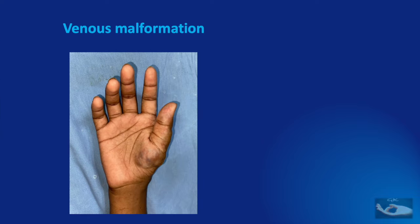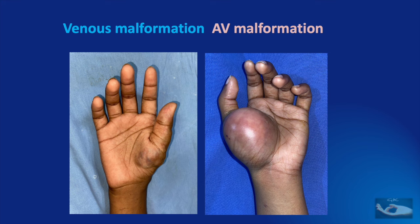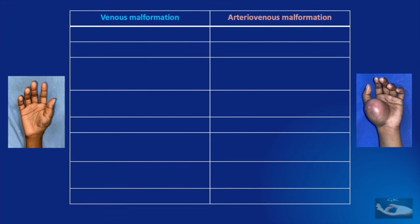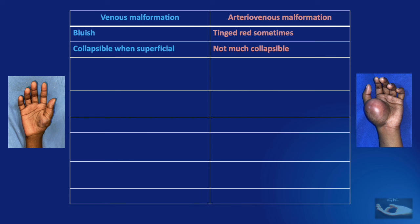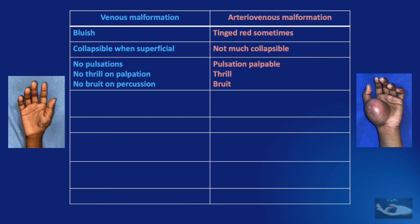We have now seen two types of vascular malformations: venous malformation and arteriovenous malformation. Venous malformations are usually bluish in colour whereas arteriovenous malformations may be tinged red. Venous malformations are collapsible when superficial but not obvious when involving muscles. Arteriovenous malformations appear non-collapsible because they fill up so fast. Venous malformations typically have no pulsations, no thrill, and no bruit, whereas arteriovenous malformations are pulsatile with a thrill and bruit on auscultation.